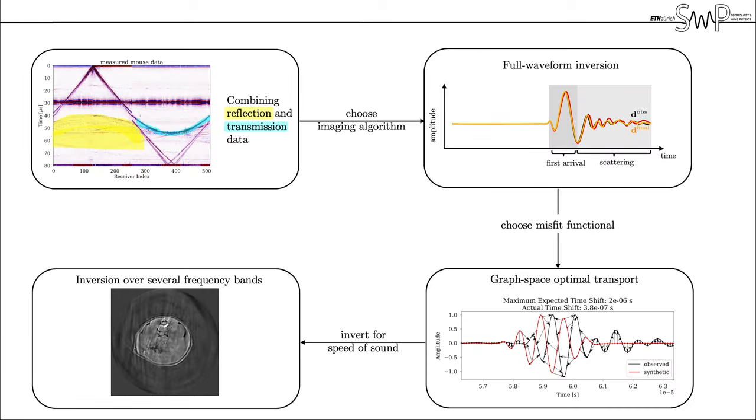Now to wrap things up here are the key takeaways from this study. First, by using a combination of reflection and transmission data, we can increase the amount of available information to reconstruct the tissue structure. However, this leads to a non-linear inverse problem, which is described by full waveform inversion. And the resulting non-convex misfit functional landscape can then be treated efficiently with an optimal transport misfit functional, which lastly allows us to obtain a high resolution reconstruction of the speed of sound tissue structure.